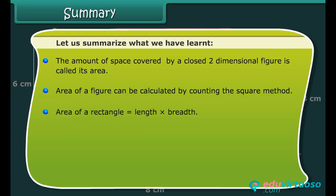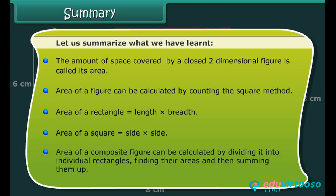Area of a rectangle is equal to length into breadth. Area of a square is equal to side into side. Area of a composite figure can be calculated by dividing it into individual rectangles, finding their areas, and then summing them up.